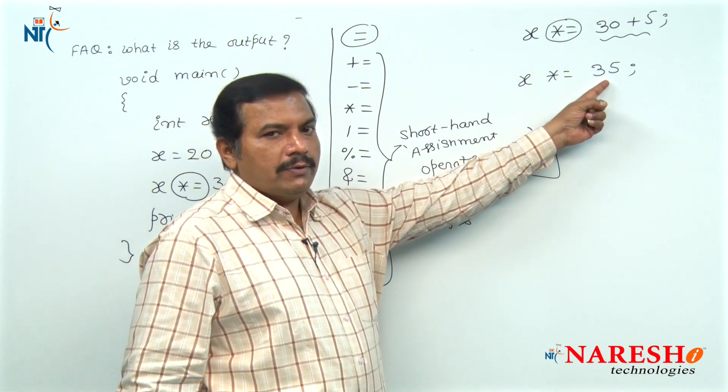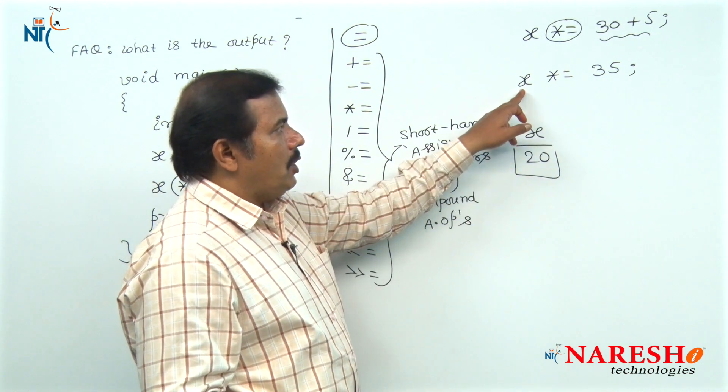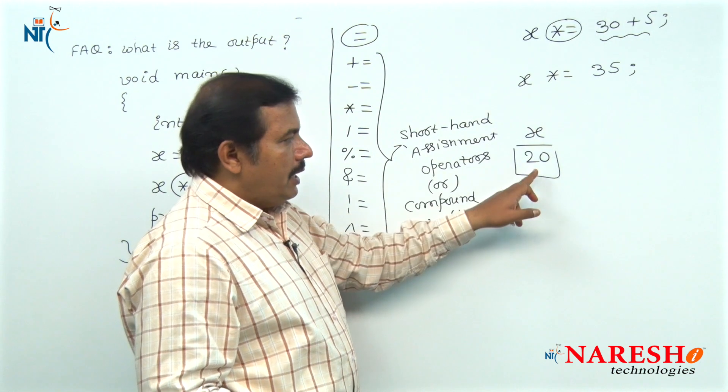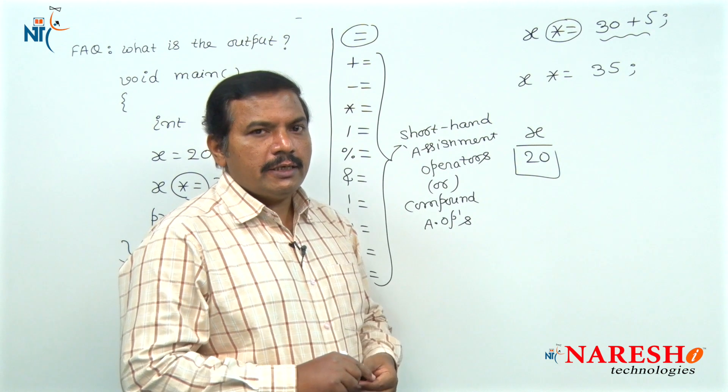Now, the right side operand value 35 is multiplied with the left side operand value x. x value is 20. 30 into 20 is 700.